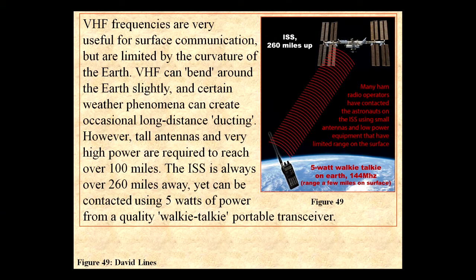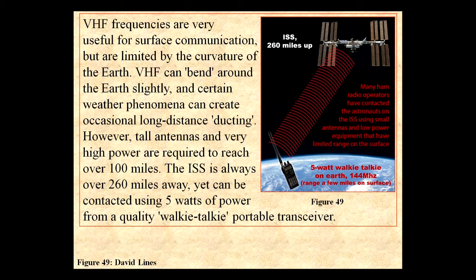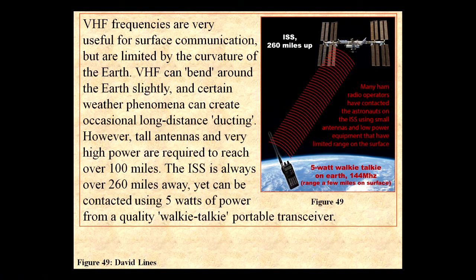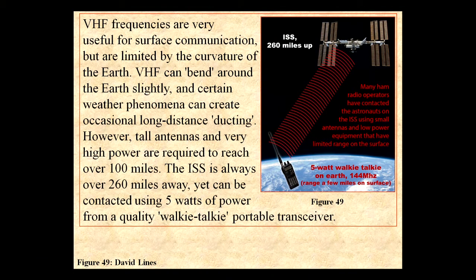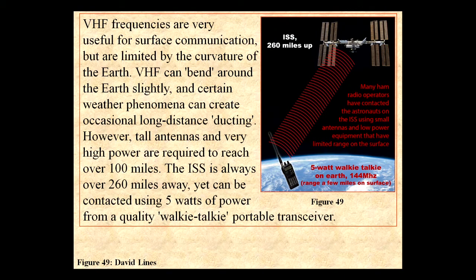VHF frequencies are very useful for surface communication but are limited by the curvature of the earth. VHF can bend around the earth slightly, and certain weather phenomena can create occasional long-distance ducting; however, tall antennas and very high power are required to reach over a hundred miles. The International Space Station is always 260 miles away, yet can be contacted using five watts from a quality walkie-talkie. All of this confirms there is curvature to the earth.